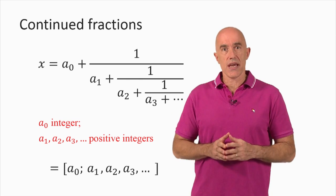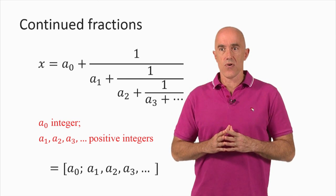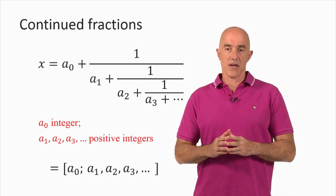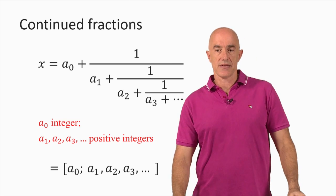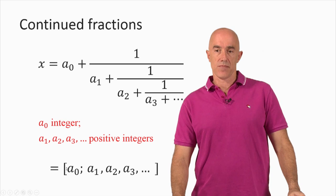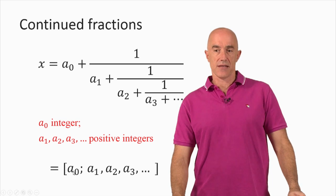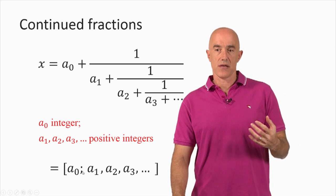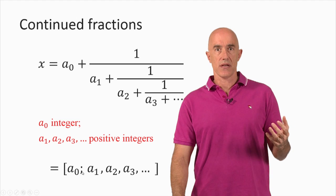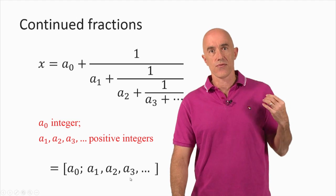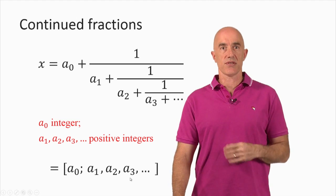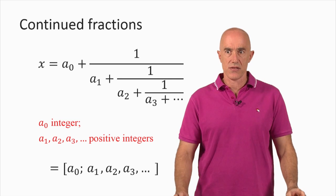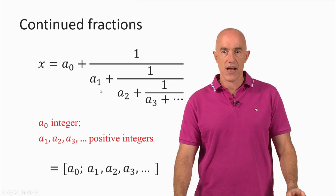There's a shorthand notation for the continued fraction. We can write it as a bracket with a₀, semicolon, and then a₁, a₂, a₃. So this is just a convenient way of writing the continued fraction.